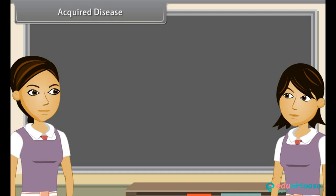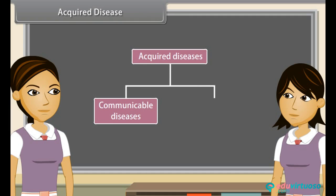Acquired disease. Yes, I know that acquired diseases occur only after birth and hence they are non-inherited. But acquired diseases are of two types: communicable diseases and non-communicable diseases. For example, influenza.